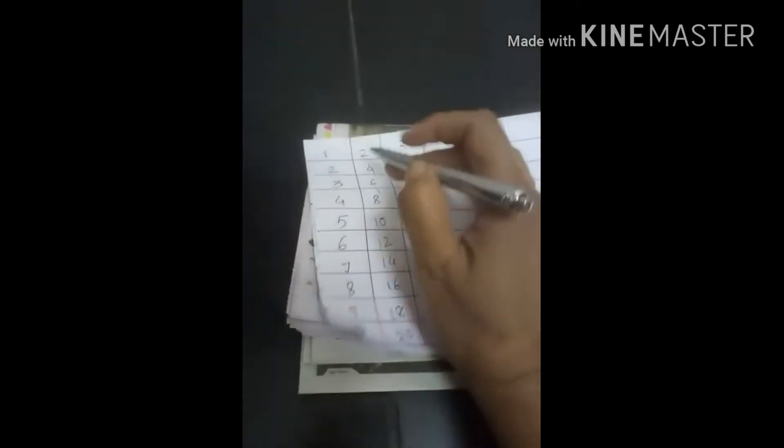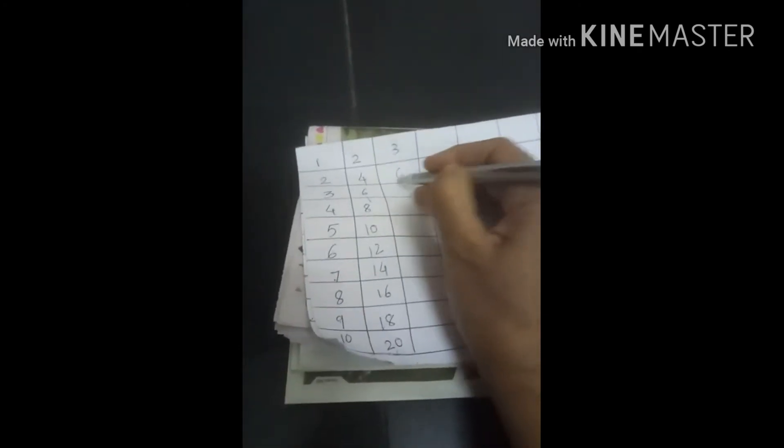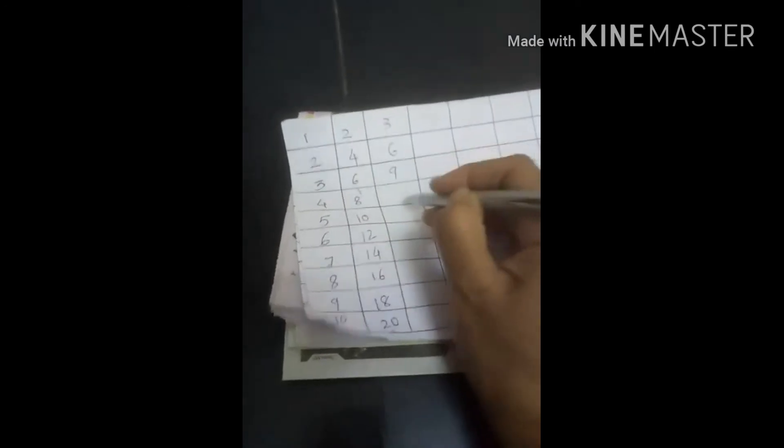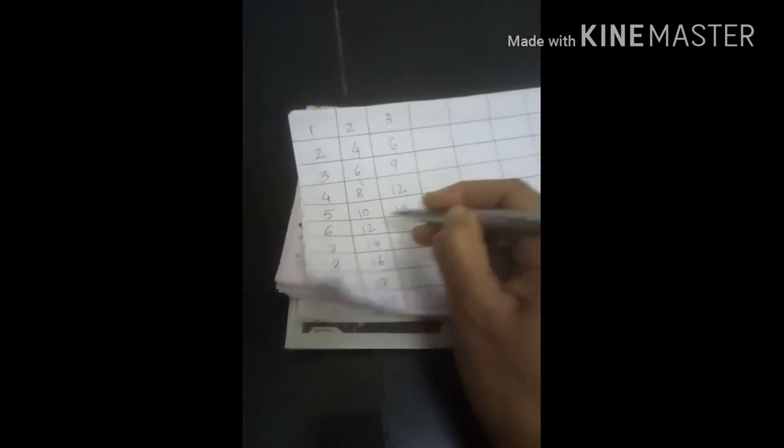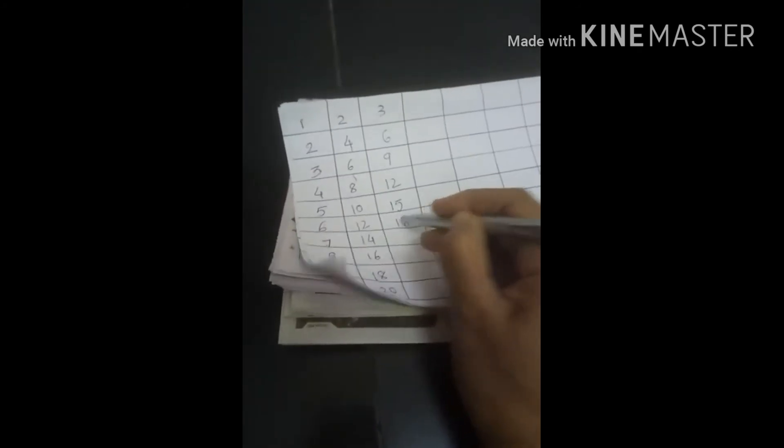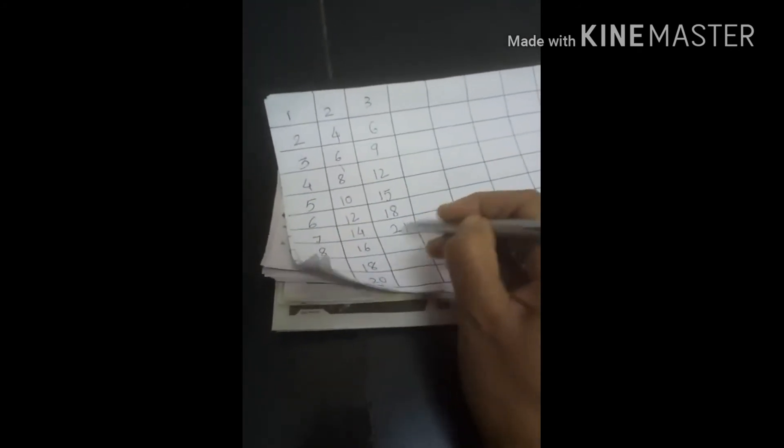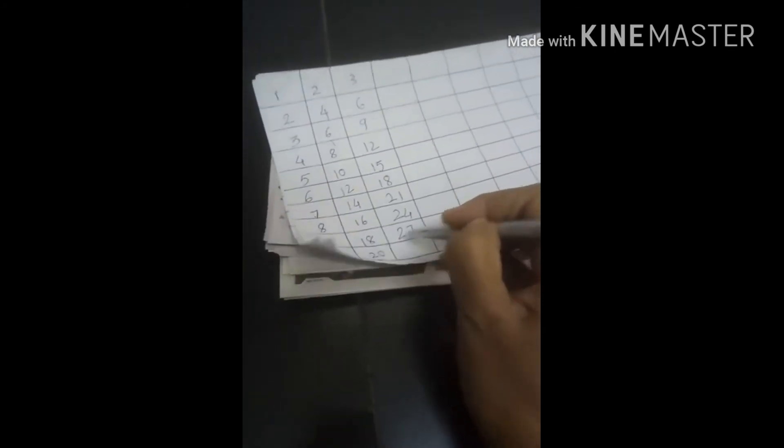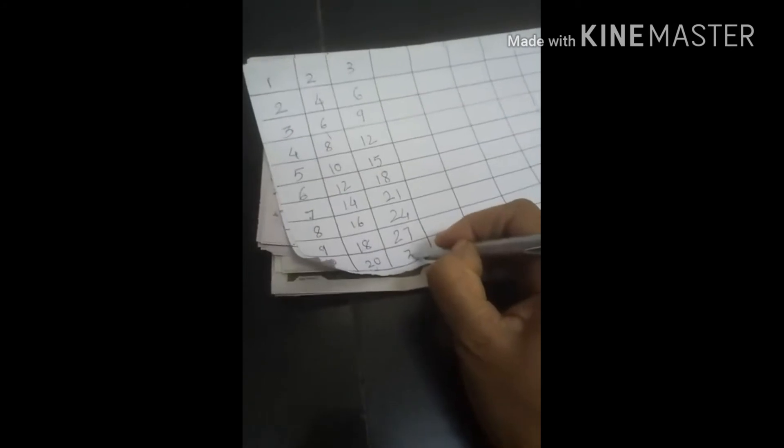1, 2, 3, 4, 5, 6, 7, 8, 9, 10, 11, 12, 13, 14, 15, 16, 17, 18, 19, 20, 21, 22, 23, 24, 25, 26, 27, 28, 29, 30. Like that we can write table of 4.